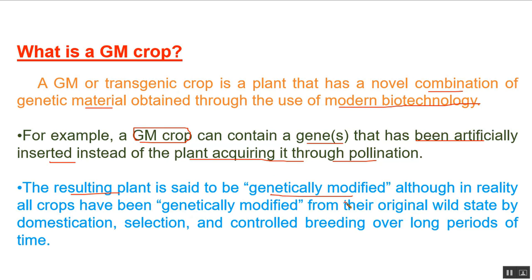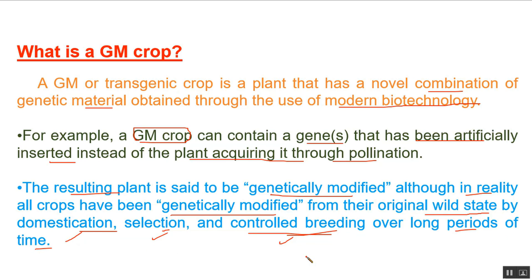The resulting plant is called genetically modified. Although in reality, all crops have been genetically modified from their original wild state by domestication, selection, and controlled breeding over a long period of time. However, the exclusive definition of genetically modified crop is different — it refers specifically to when we artificially insert a gene into another plant. This can also happen in microorganisms, making them genetically modified organisms.